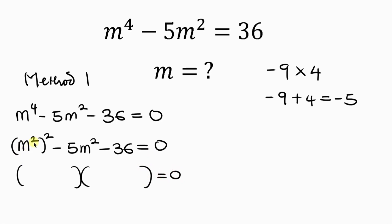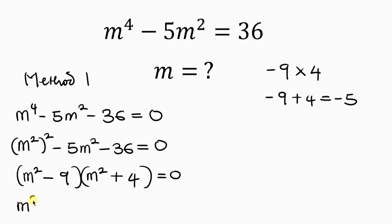Now I have m squared all raised to the 2, which means m squared times m squared. So the factors — I have negative 9 and plus 4 placed in each bracket. So we have two cases: we have m squared minus 9 to be equal to 0, or we have m squared plus 4 to be equal to 0.